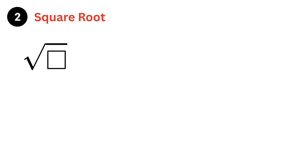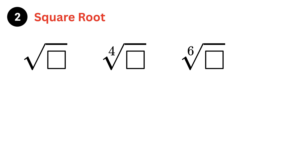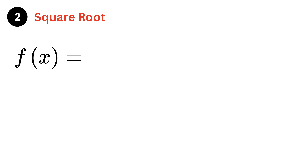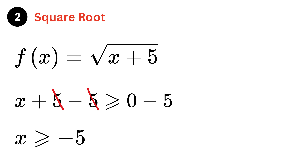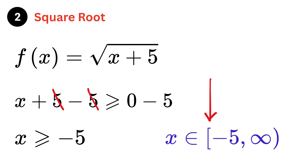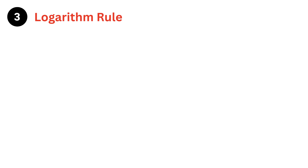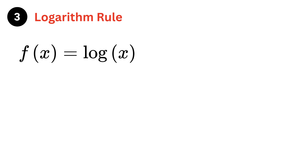The next constraint applies when you see a square root or any even-numbered root like the fourth root or sixth root. You must make sure the radicand — the number inside the root — is greater than or equal to zero. For example, f(x) = square root of (x plus 5): x plus 5 must be ≥ 0, so subtracting 5 gives x ≥ −5. The domain is from −5 to positive infinity, with a square bracket to include −5.